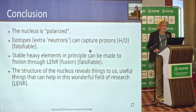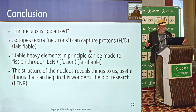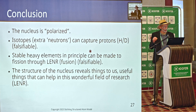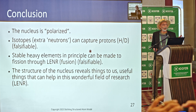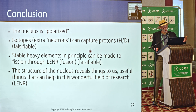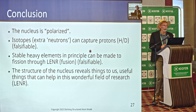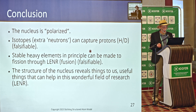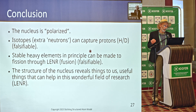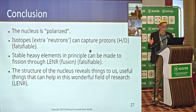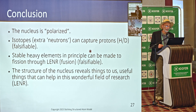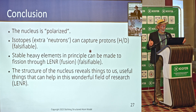Concluding: the nucleus is polarized, just like water. The isotopes of elements with extra neutrons can capture protons and deuterons, etc. And this is falsifiable — we can do these experiments to check if it's really the case. One of the most important preliminary conclusions, or hypotheses, is that stable heavy elements, in principle, can be made to fission through LENR fusion — which is falsifiable. I'm personally convinced that this community has actually stumbled on that potential mechanism. We could fuse and fission a whole bunch more elements than just uranium. The structure reveals these things to us — useful things that can help us in this wonderful field of research: LENR.